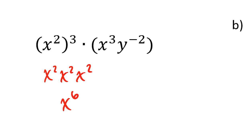The shortcut is when I have a power to a power, I can multiply this exponent times the power I'm raising it to. So 2 times 3 is 6.